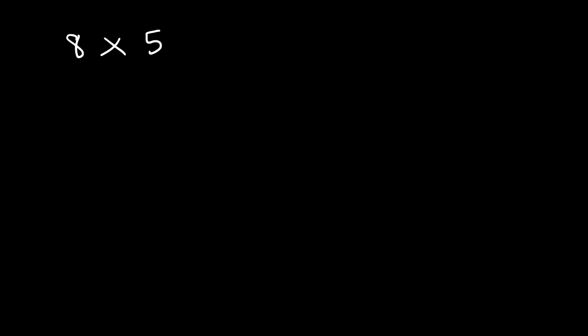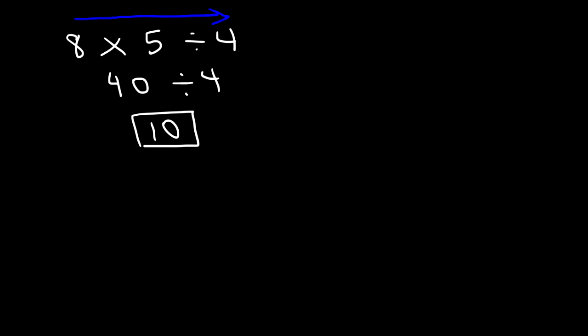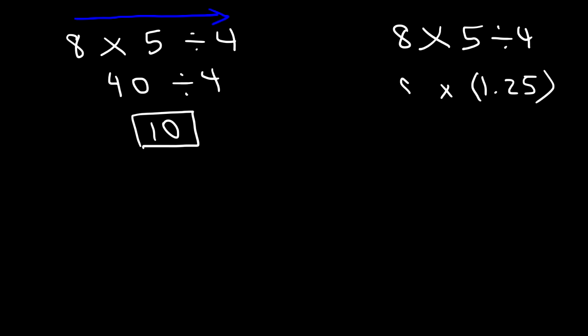Here's another one: 8 times 5 divided by 4. Go ahead and try that. The best thing to do is simply work from left to right. 8 times 5 is 40, and 40 divided by 4 is 10. By the way, in this particular example, if you divide first, you get the same answer. 5 divided by 4 is 1.25, and if you multiply that by 8, this also gives you 10.